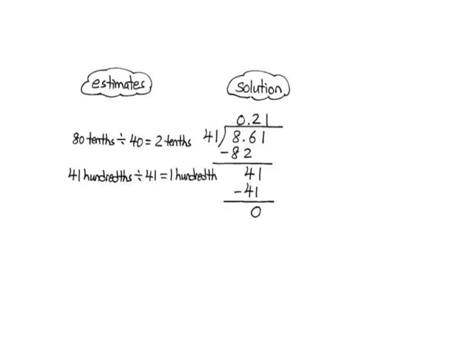Again, we look at our 8 ones. That's not going to work with our 41. So we're now going to decompose my 8 ones into 80 tenths, and we're going to add the 6 tenths that's already in the tenths place, so we have 86 tenths. We're going to take our divisor and round it to 40. The 86 tenths rounds to a compatible number of 80 tenths, so we divide 80 tenths by 40 and get 2 tenths. The 2 tenths is recorded here.